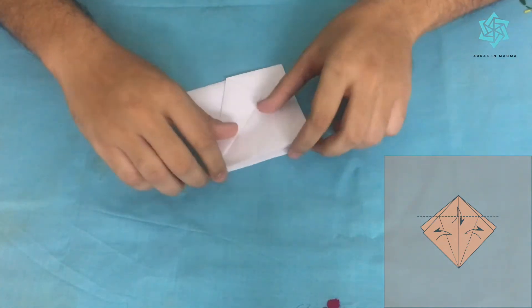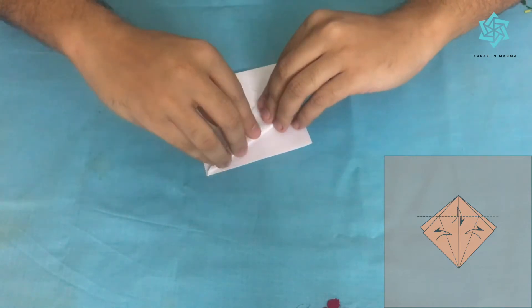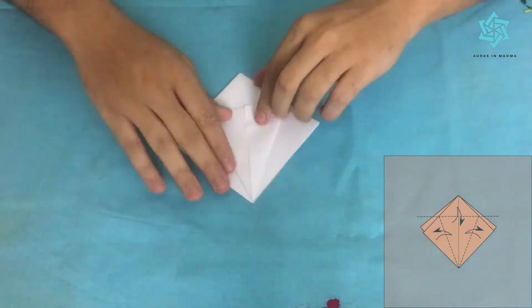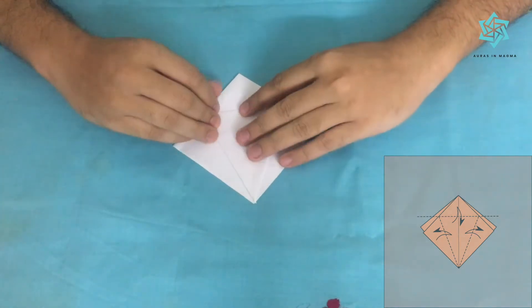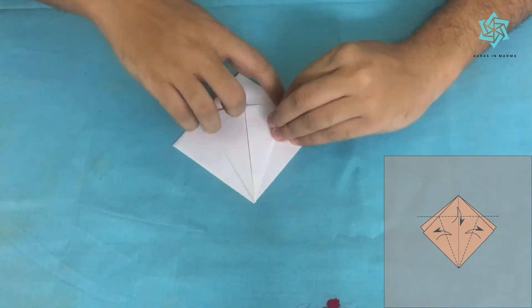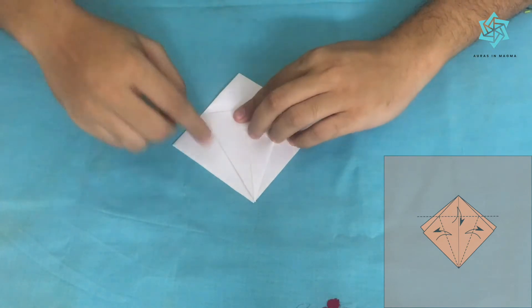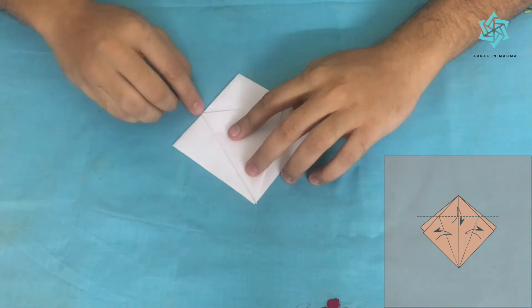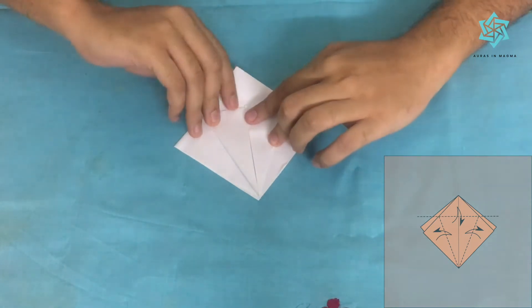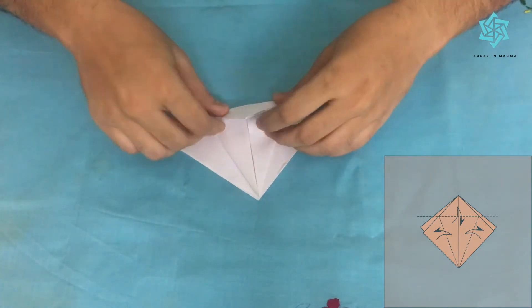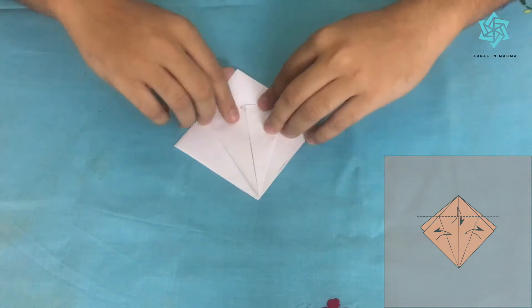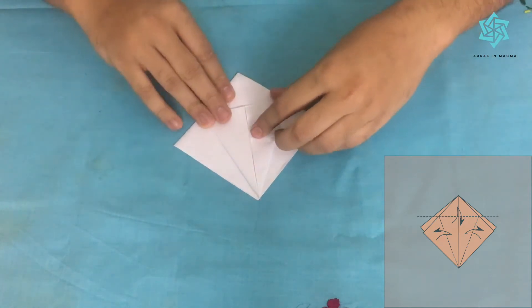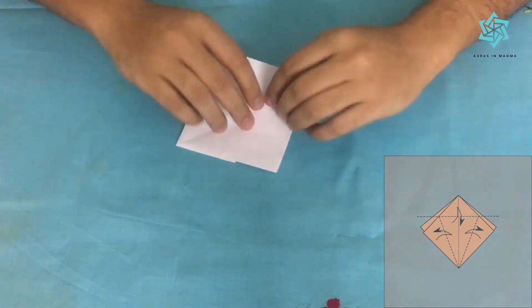And I'll do this for all the sides. Why I'm doing this is just to help me crease. So these folds are pre-creases. I'll make another pre-crease. When I'm folding this edge on top over here, I'll get these two points. Then what I'll do is fold the top part, this top triangle back like that, and this is again a pre-crease. I'll open this up. Similarly on the other side.